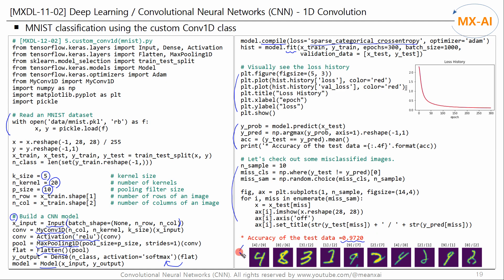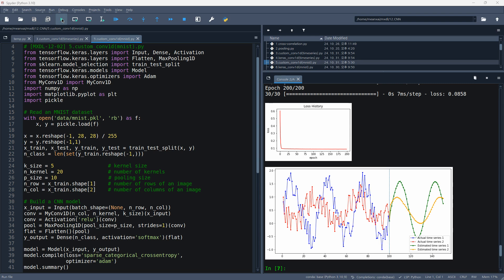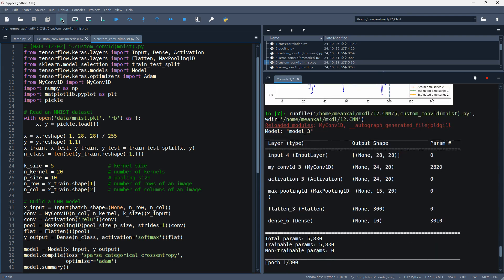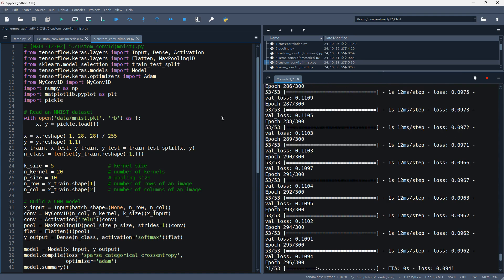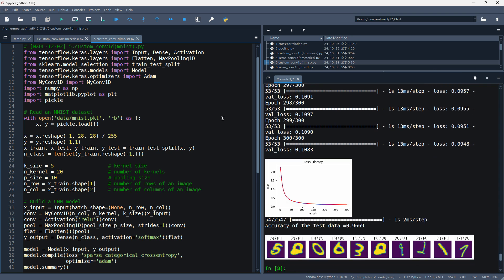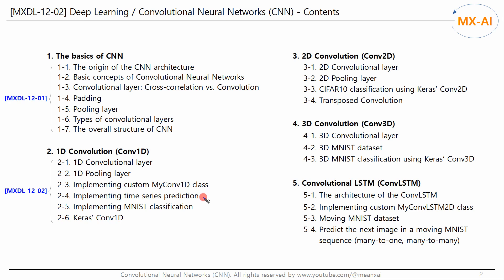Checking misclassified images: the first example is actually a 4 but was misclassified as a 9. These models can be easily implemented using the Keras Conv1D class, but we implemented a custom class to better understand the 1D convolutional layer. We have looked at how the 1D convolutional layer works and applied it to both regression and classification problems.